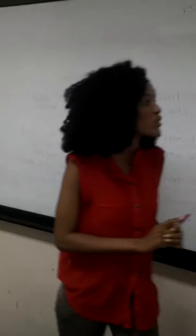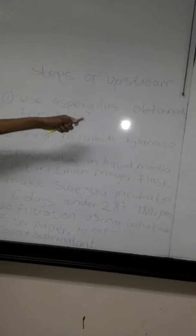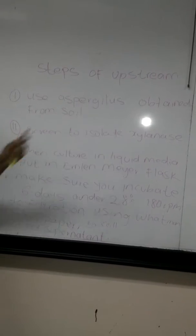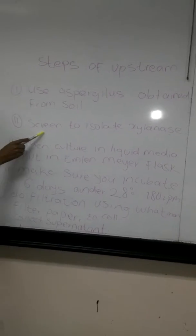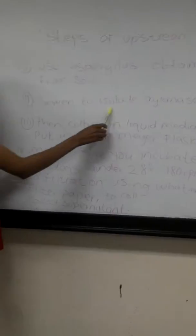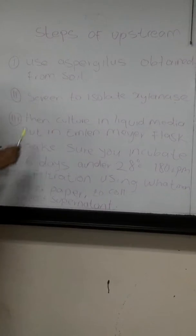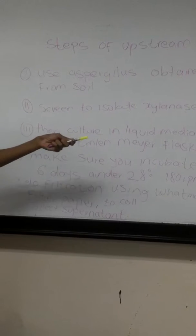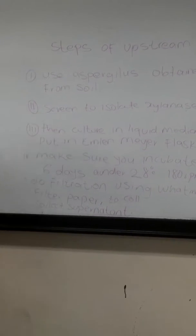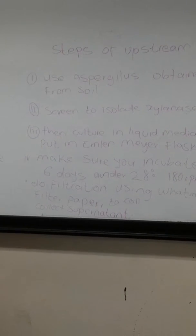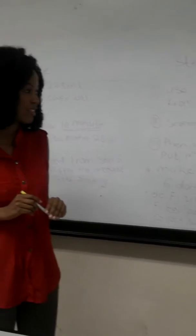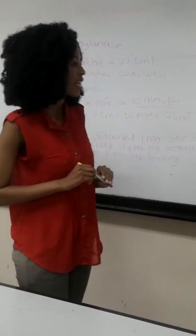I'll be sharing with you the steps of upstream processing. I have written them on the board for better view. First, make sure you use Aspergillus niger, which is obtained from the soil. Since the soil is dirty, you need to screen it to remove all obstacles that can cause impurity, in order to isolate the organism. After screening, culture it in liquid media and put it in a flask. Then incubate for six days at 180 RPM.